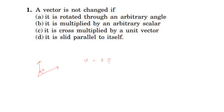If you multiply this vector by a number like four, then the magnitude changes, so the vector changes. Third option: the vector is cross-multiplied by a unit vector. When we multiply a vector by another vector, the resultant — known as cross multiplication — gives a resultant vector perpendicular to both vectors, so direction changes.